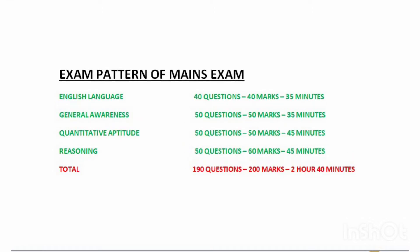On the other hand, the exam pattern of the mains exam consists of four sections: English Language, General Awareness, Quantitative Aptitude, and Reasoning. General Awareness has 50 questions of 50 marks in 35 minutes. English Language consists of 40 marks in 35 minutes. Quantitative Aptitude consists of 50 questions of 50 marks in 45 minutes, while Reasoning consists of 50 questions of 60 marks in 45 minutes. In total, 190 questions of 200 marks in 2 hours 40 minutes.